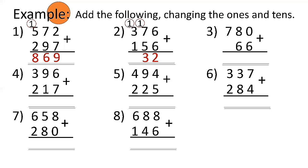3 plus 3 plus 1 is 7. So the answer is 532. Number 3: 780 plus 66 — 0 plus 6 is 6. 8 plus 6 is 14, bring down 4, carry 1 to the hundreds place. 7 plus 1 is 8. Answer is 846.